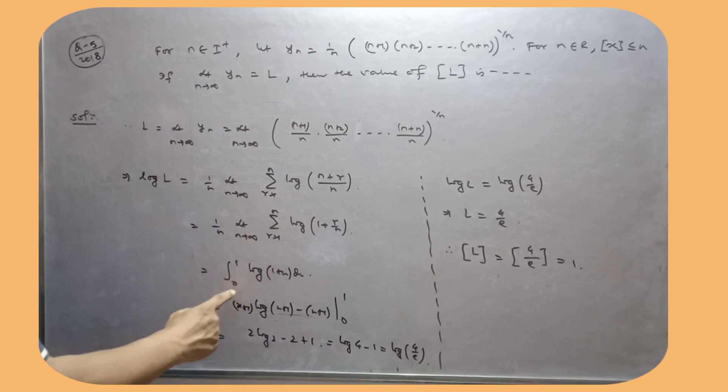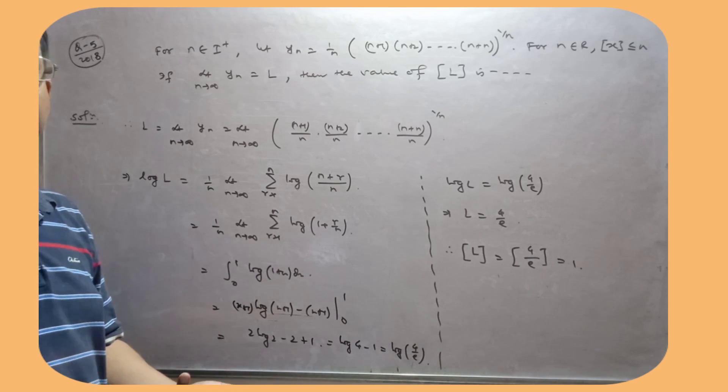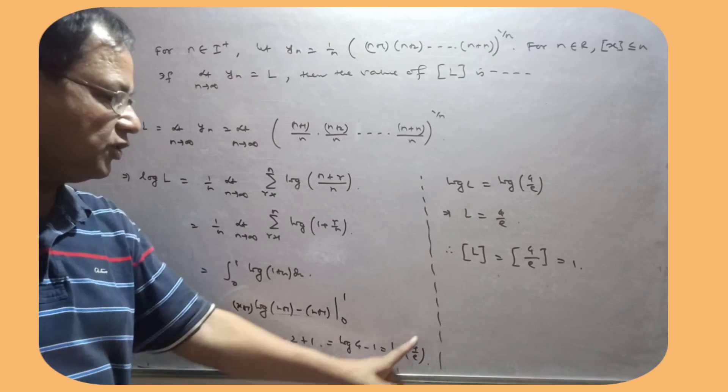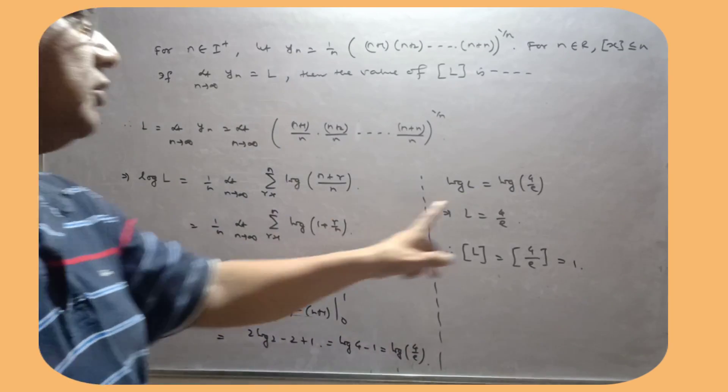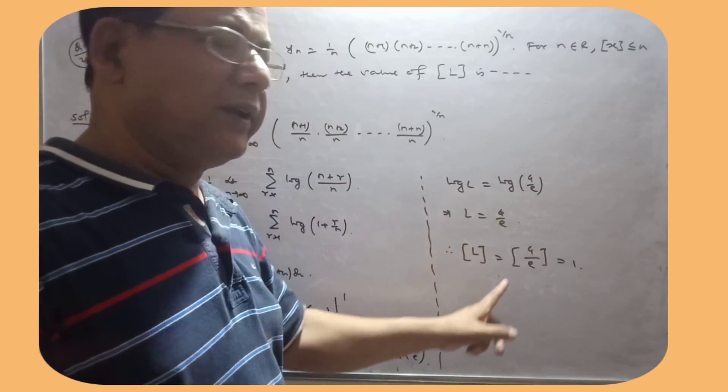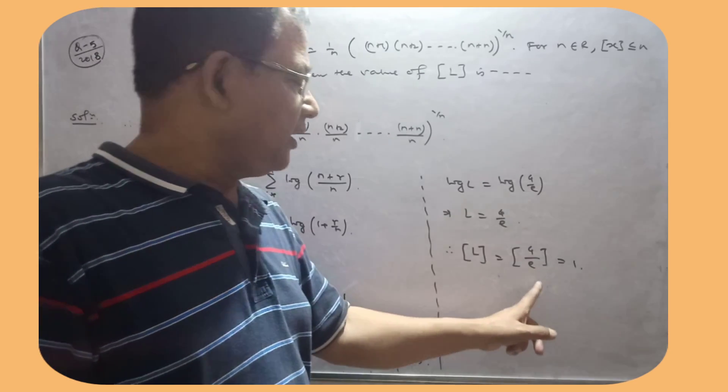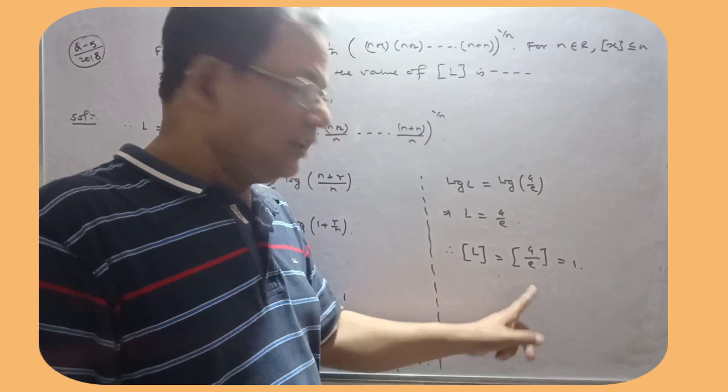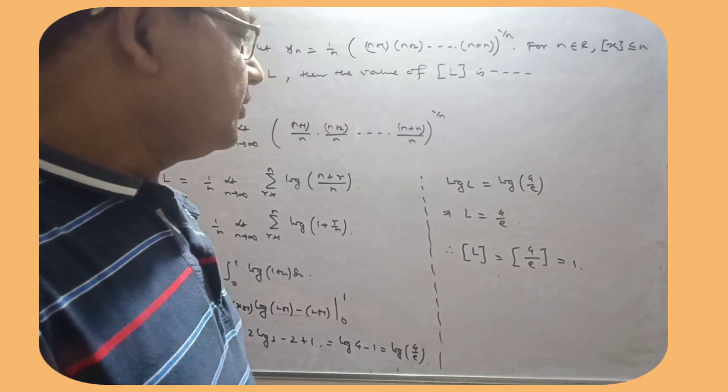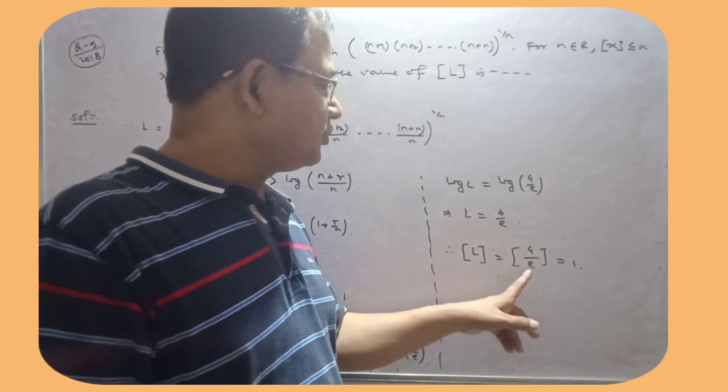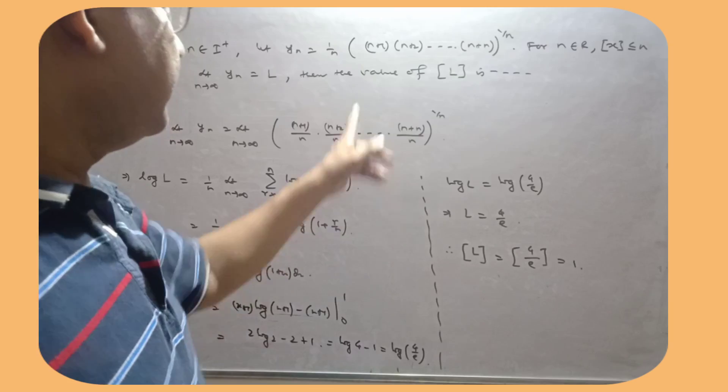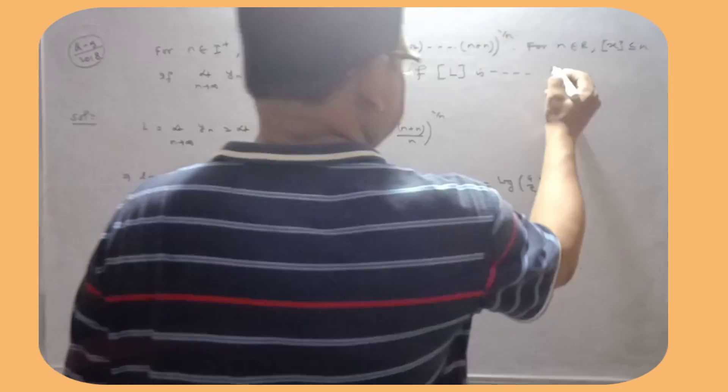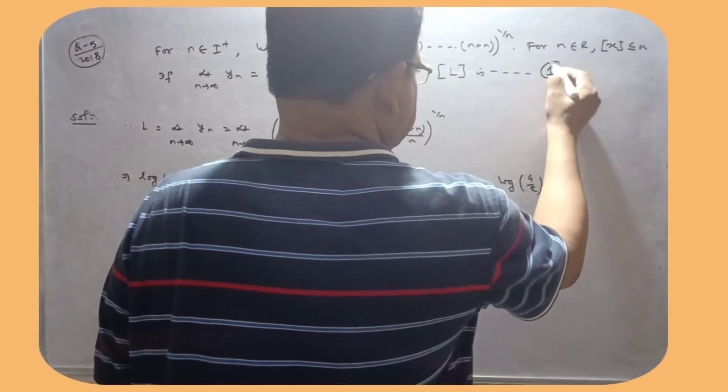And 1, yeh 0 hai, and N jaha hoga, so that is this 1. Log X ka integration, X log X minus X hai, usse likha hai, so that is log 4 by E. Log L equal to log 4 by E, L ka value 4 by E. So greatest integer of L, so that is equal to this. So E ka value kya hai, 2 point 7 consider karo, so that is this 1. So this is equal to 1 hai. So then the value of this is 1.